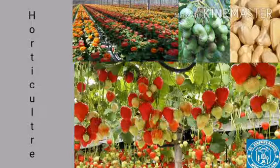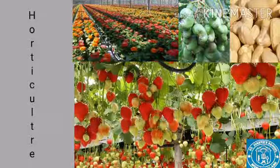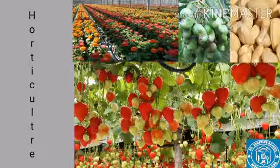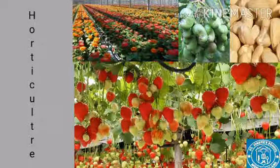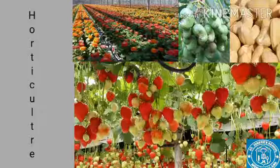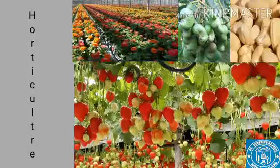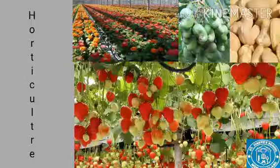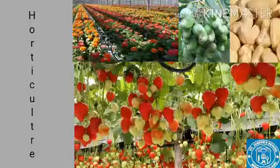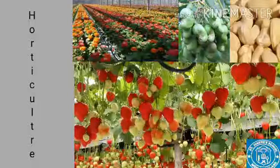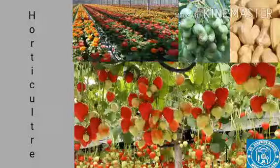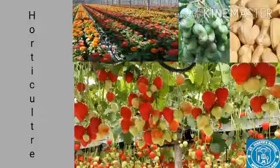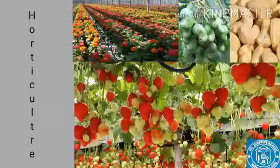The next topic is horticulture crops. India is the second largest producer of fruits and vegetables. India leads in producing peas, cauliflower, onion, cabbage, tomato, brinjal, etc. This covers food crops other than food grains.